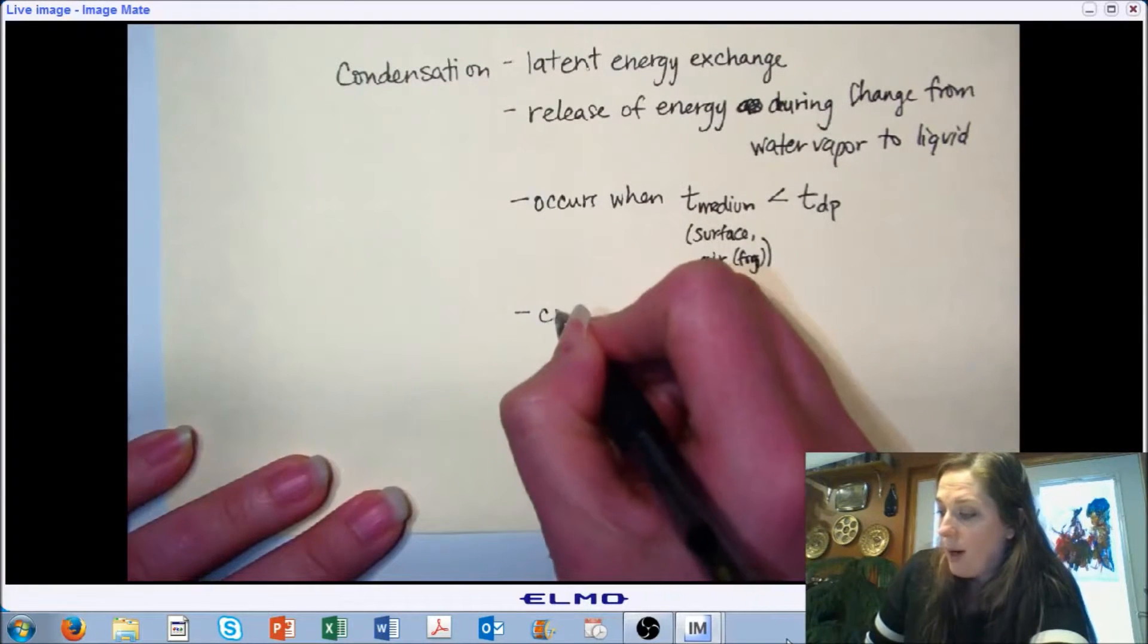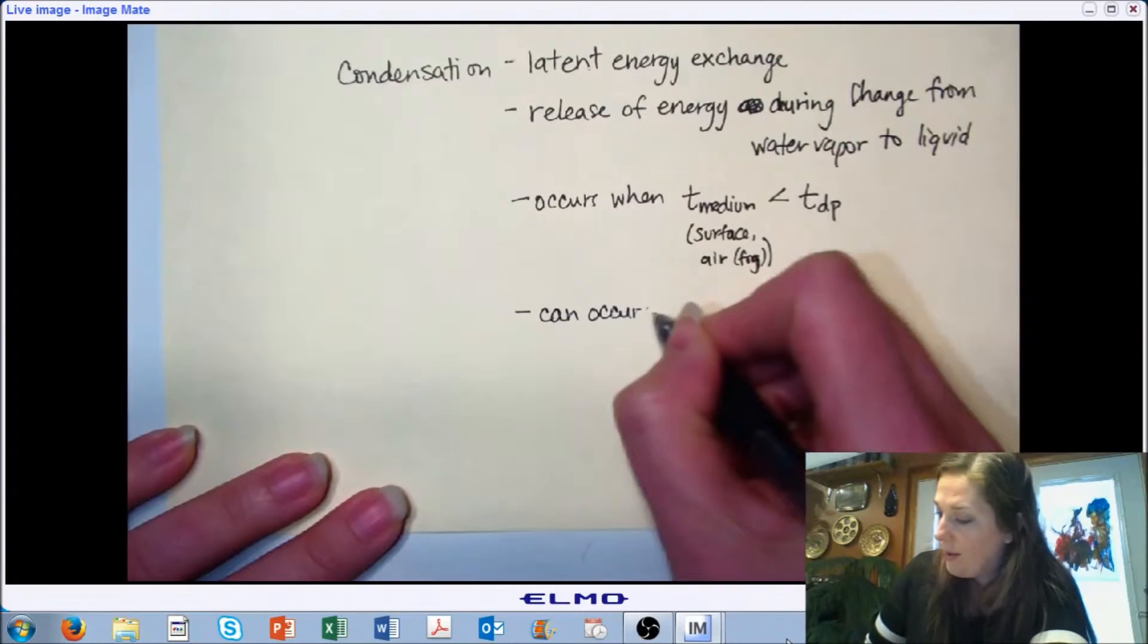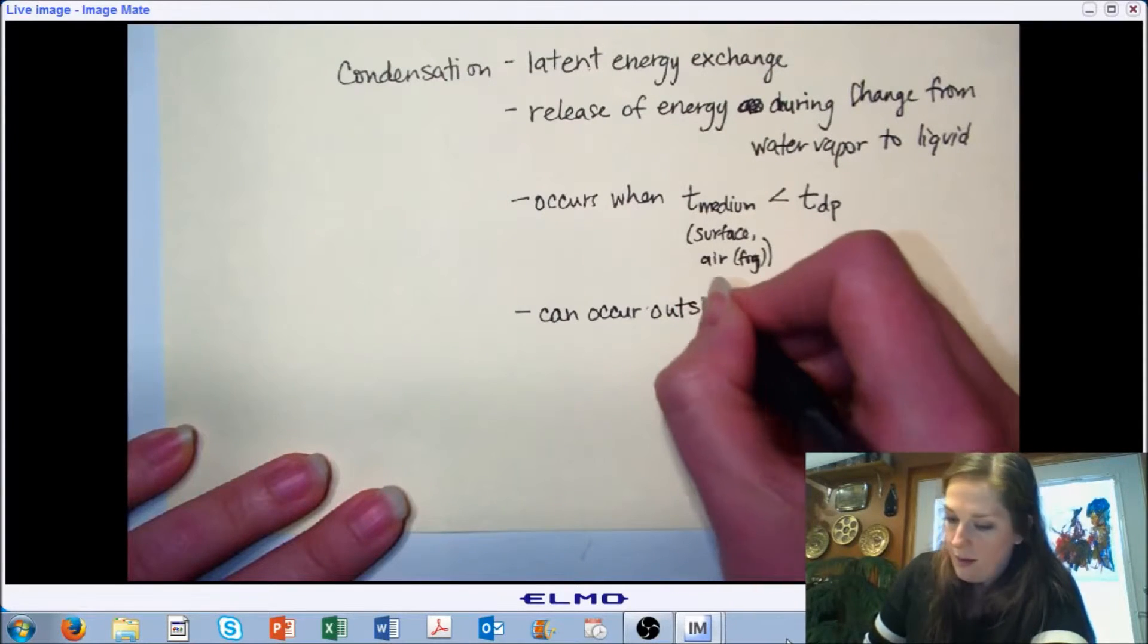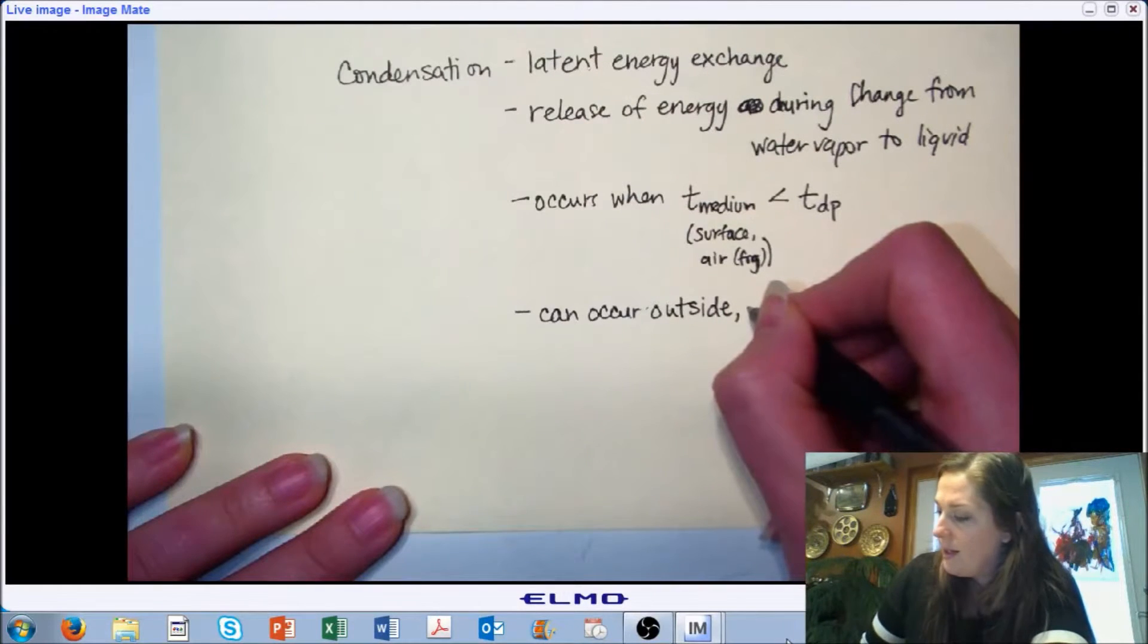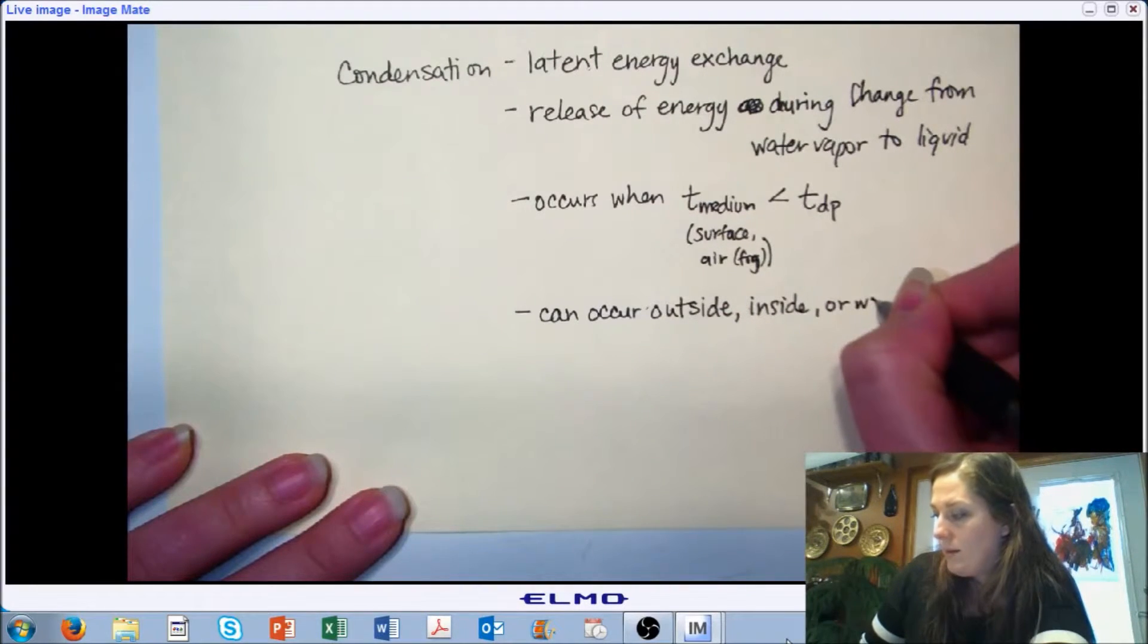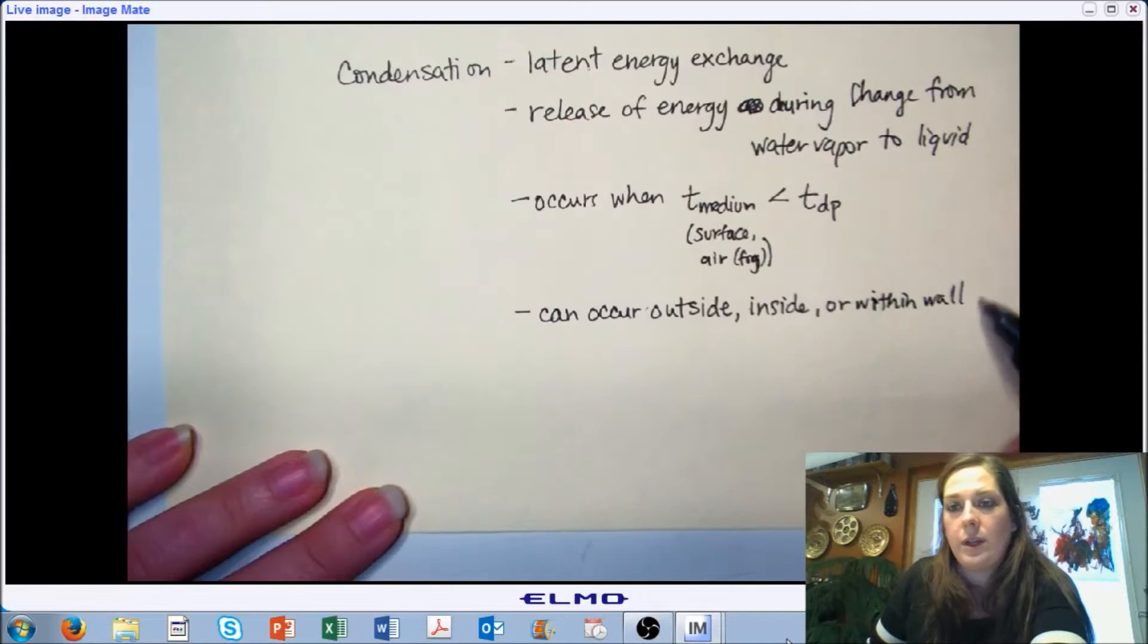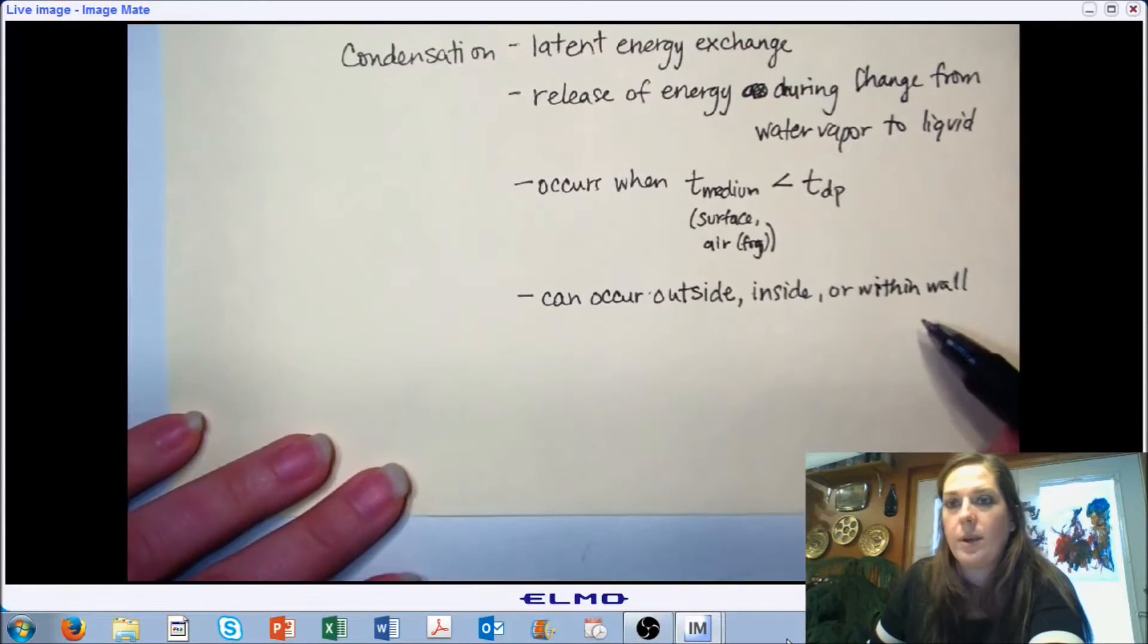When it becomes a problem is whenever it occurs where we don't want it to occur. So it could occur outside, on an outside wall, on an inside wall, or within a wall. And any of those cases can be a problem, but especially we're concerned about the within a wall. We don't want condensation happening within our wall sections.